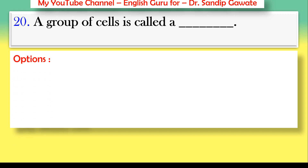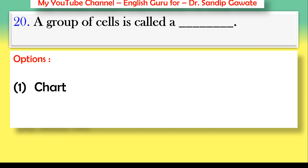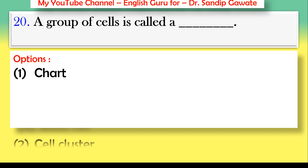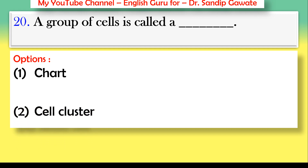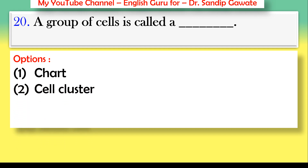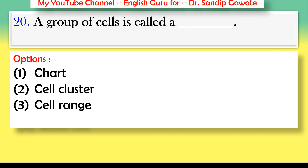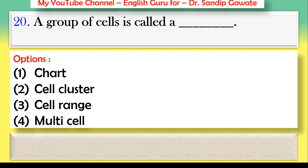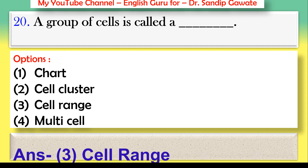Question 20: A group of cells is called — chart, cell cluster, cell range, or multi-cell? Keep in mind we are talking about Google Sheets. The correct answer is option number three — a group of cells is called a cell range.